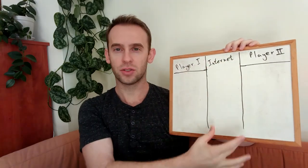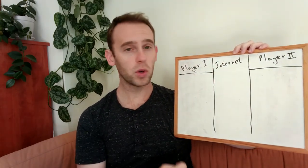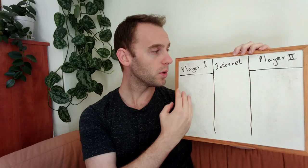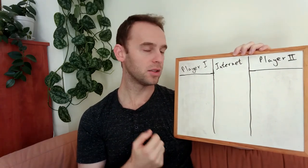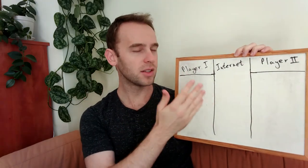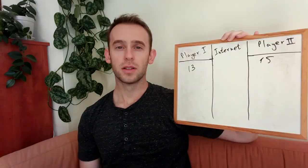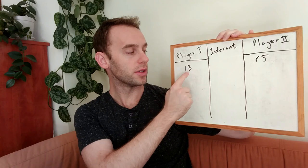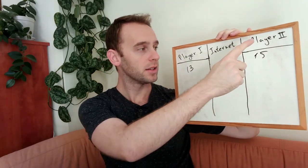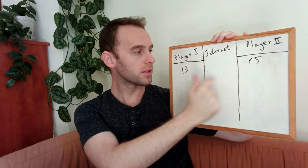Let's assume we have a game with two players. It is an online game and there is the internet between the players. They are playing against each other and we want each of the players to know the score of the other player, to make them play a little bit harder — or the other way around, if they see their score is high enough they can relax. For example, the first player's score is 13 and the second player's score is 15.